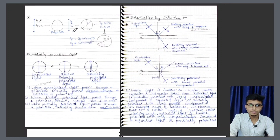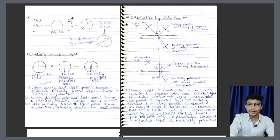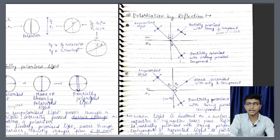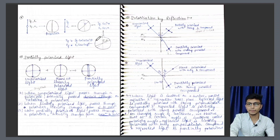Yeh wala concept dekho: suppose yahan par I0 by 2 ek intensity thi, aur jo ek pass axis se pass ho gaya to ek hi component bacha — aur jo bahar wala component tha, intensity I0 by 2, I0 by 2 mein divide ho gaya tha. Aur resultant intensity yahan par I0 by 2 cos square alpha hoga — basically pass axis aur doosre pass axis ka angle hai.